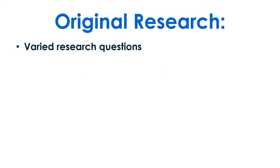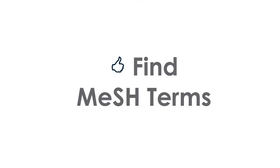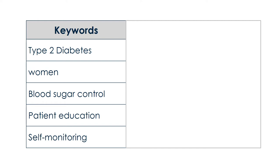Remember, the original research you find will have varied research questions and may not include all your PICO factors. We recommend using MeSH terms for the best search results. MeSH terms are controlled vocabulary used to index medical and health information. For this PICO question, our keywords are type 2 diabetes, women, blood sugar control, patient education, and self-monitoring.